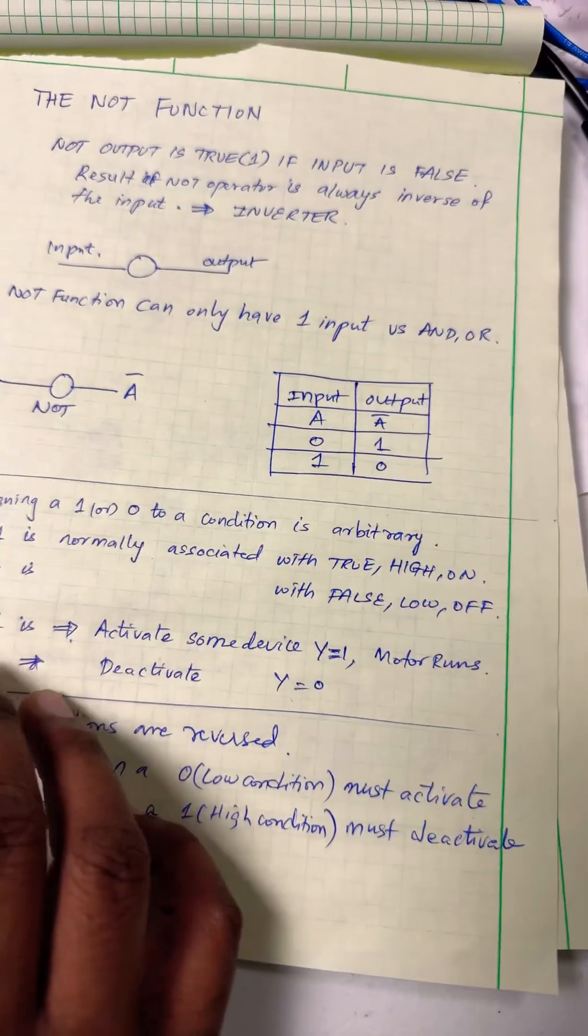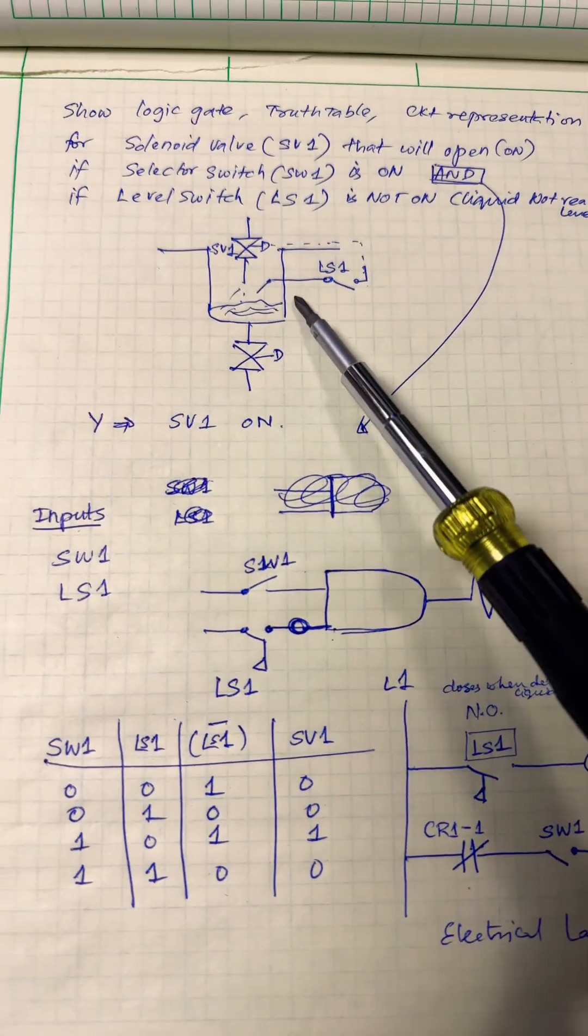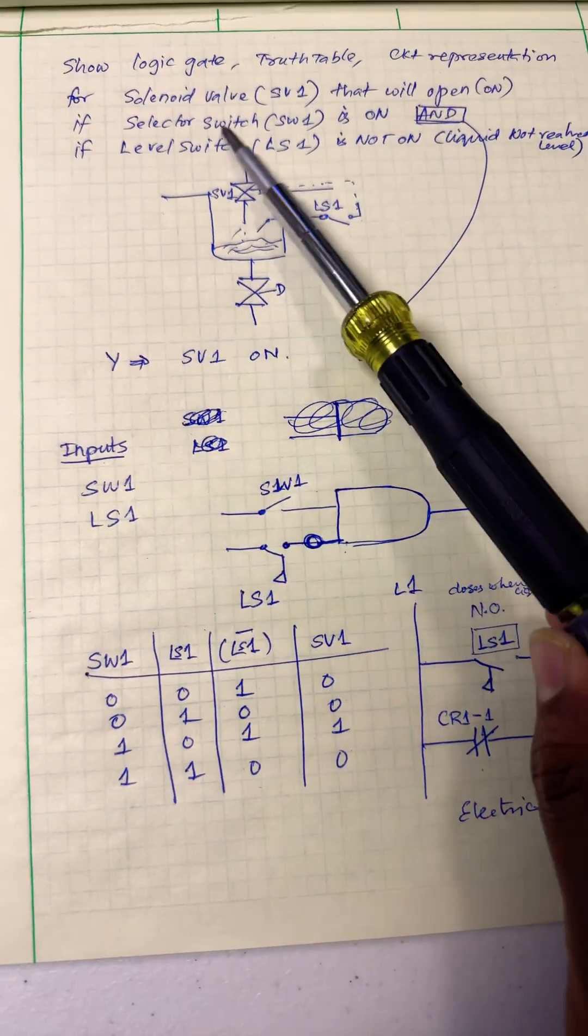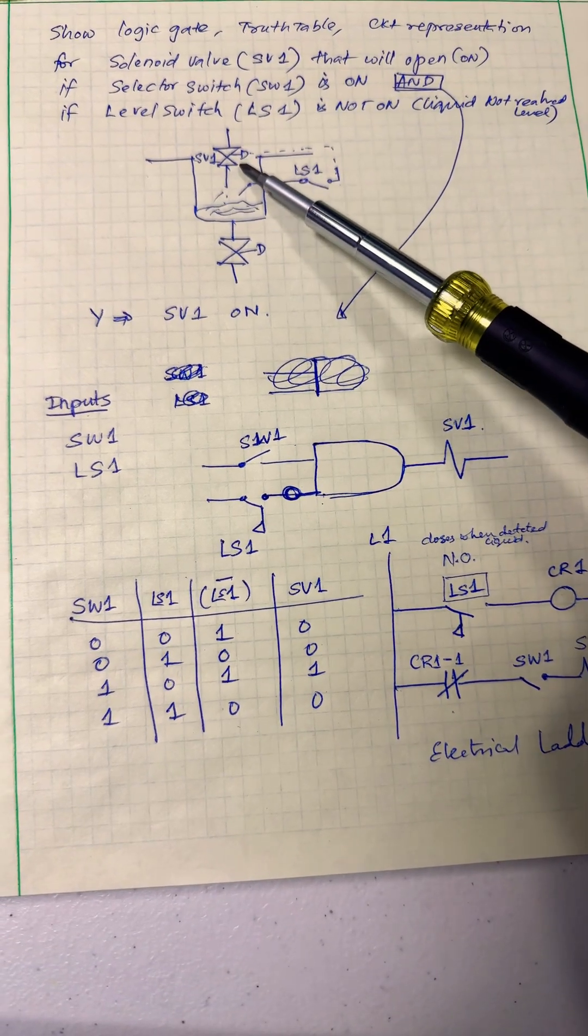Let's look at the application of NOT using an example. If you had followed my previous videos where we talked about a tank sequence, assume we have a tank and we have a valve which opens up and fills the tank.